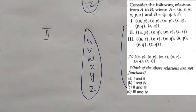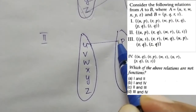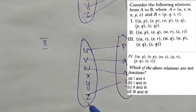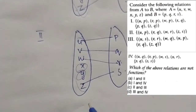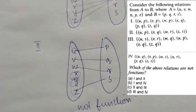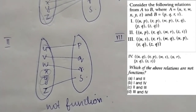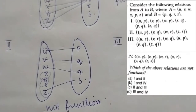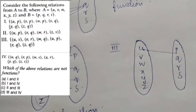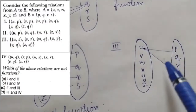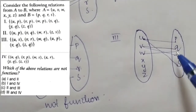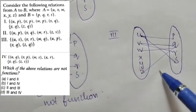The second relation has ordered pairs: u→p, v→q, w→r, z→s. There is no image for x and y — they are not mapped. This is not a function because not every element of A has an image. The third relation has W→Q, U mapped, V→Q, Z→Q — but some elements are not mapped. This is not a function.